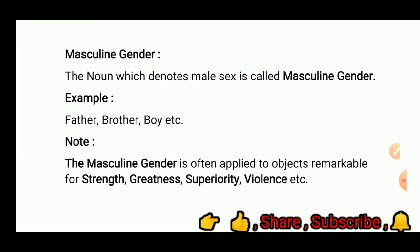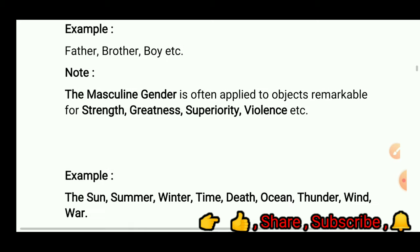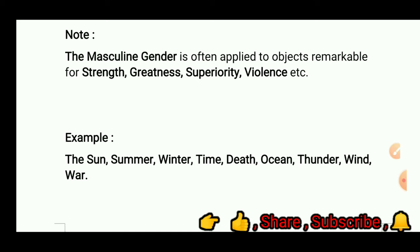Masculine gender: the noun which denotes male sex is called masculine gender. For example, father, brother, boy, etc. Note: the masculine gender is often applied to objects remarkable for strength, greatness, superiority, violence, etc. For example, the sun, summer, winter, nature, time, death, ocean, thunder, wind, and war.